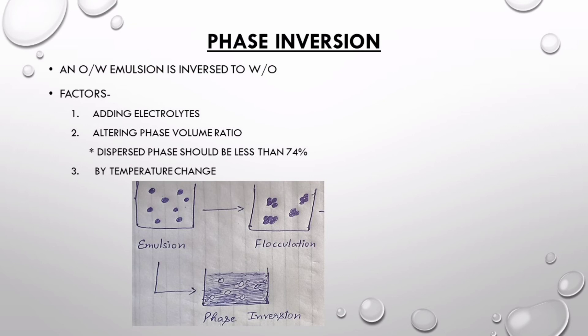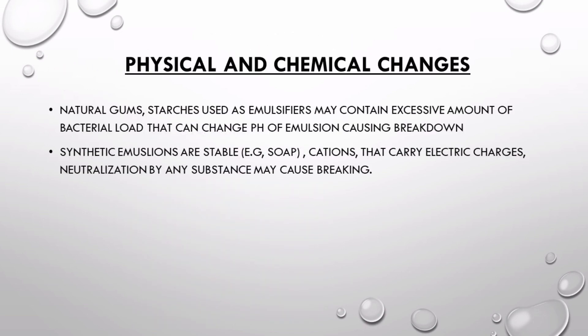Another factor causing phase inversion is phase volume ratio. For an emulsion to be stable, dispersed phase concentration should be between 60 to 74 percent. If it exceeds 74 percent, there will be phase inversion. A third factor is temperature change: if the emulsion is kept in a hot environment, the increased temperature will interfere with the hydrophilic-lipophilic balance (HLB) of the surfactants, causing phase inversion. To avoid this, emulsion should be kept in a cool and dry place.